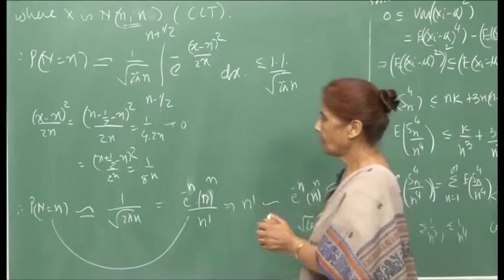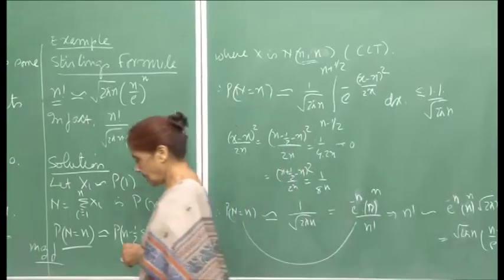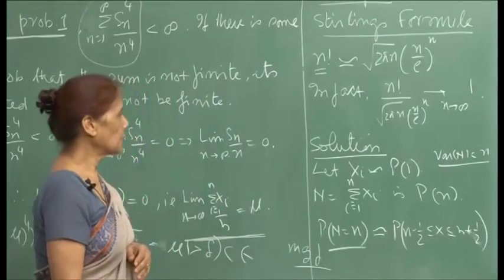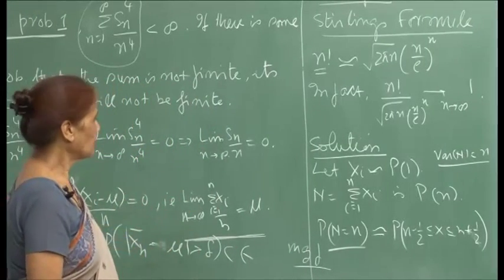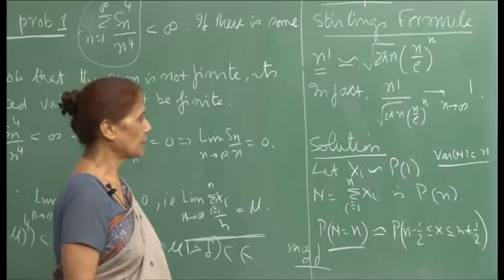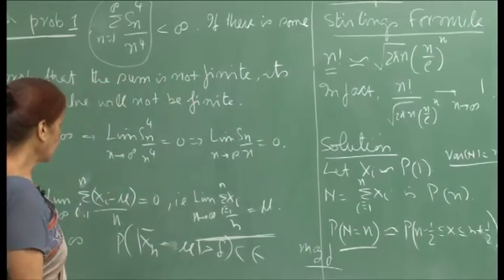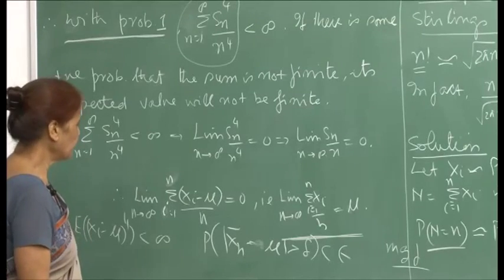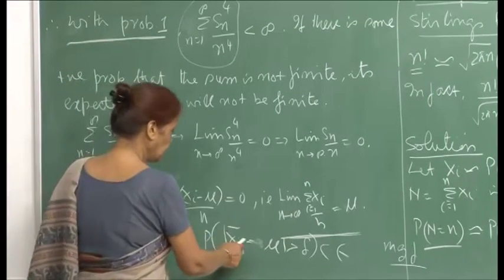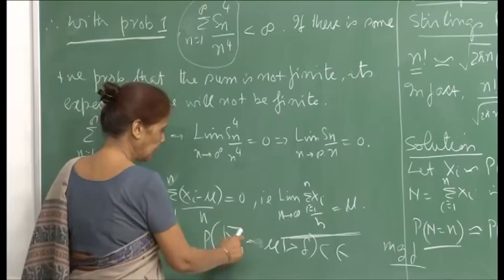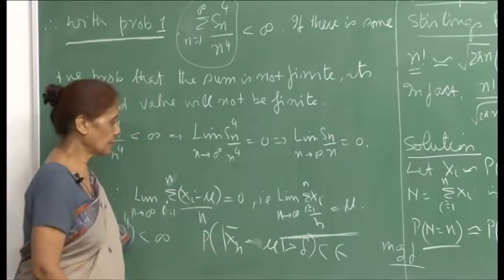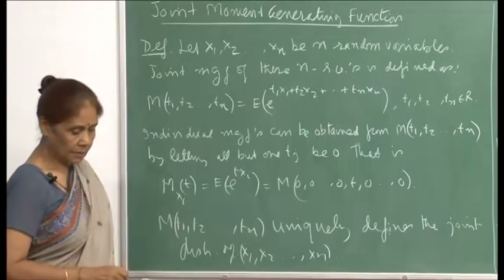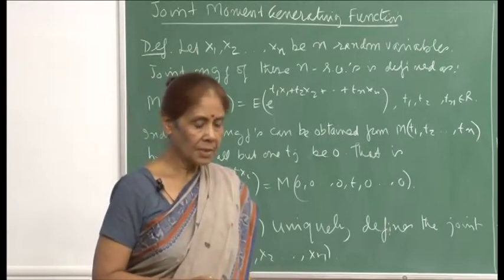This is an interesting application of the central limit theorem that I thought worth discussing. The strong law of large numbers has been established; for practical purposes, we continue to approximate μ by x̄_n for reasonably large values of n. Now I want to talk about joint moment generating functions.